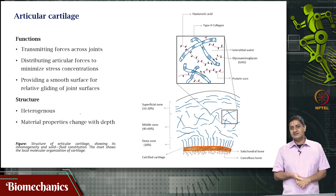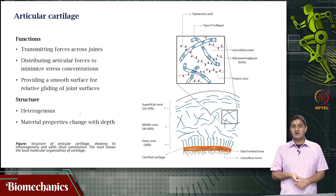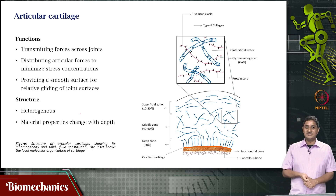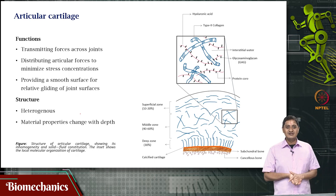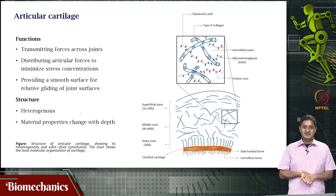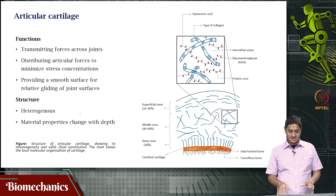What immediately comes to mind is the gliding that happens between the femur and the tibia-fibula at the knee joint — the gliding between the femur and the bones of the lower leg. This is something we discussed while looking at the statics of the knee joint.